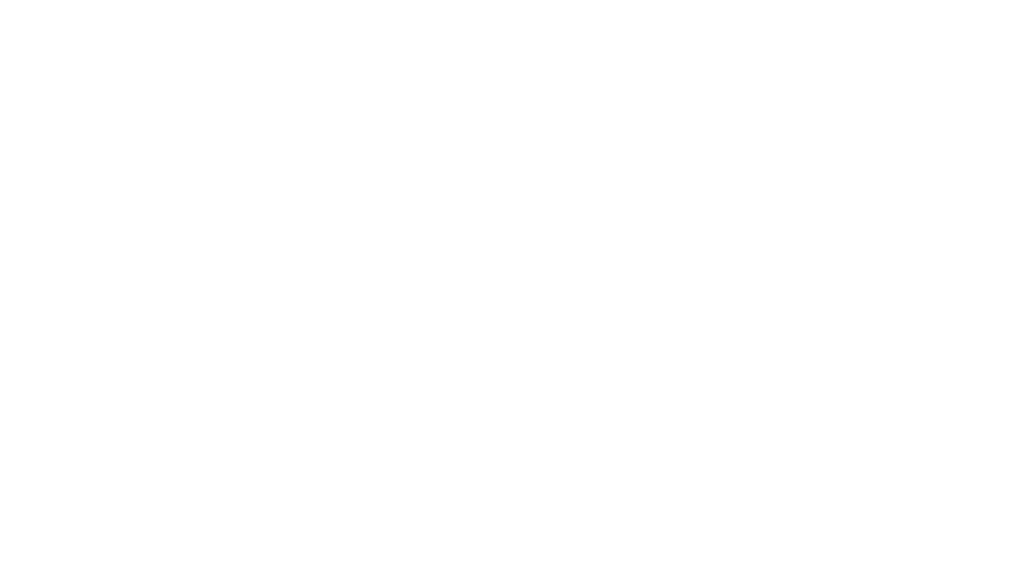Let's present the formula. The CAGR is equal to the EV divided by the BV to the power of 1 divided by N minus 1 and multiplied by 100, where the EV is the ending value, BV is the beginning value, and N is the number of years.